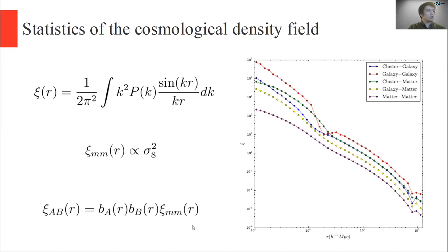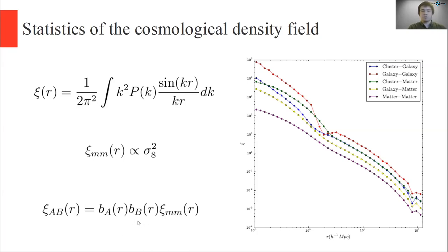This final equation shows how we actually use tracers. We select tracers that we think trace the dark matter density field — in this case, we have a bunch of tracers A and B. Since they're tracers, the correlation function of A and B is proportional to the correlation function of the matter, but there are extra details you have to model in the form of bias factors. The bias factor of A and the bias factor of B tell you about the relationship between the matter and that tracer density field. The whole game is picking tracers that are sensitive to cosmology and accurately modeling their relationship with the underlying matter density field.